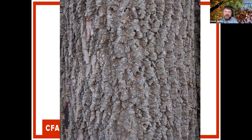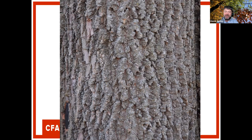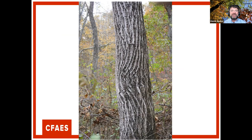White ash bark is shown, followed by butternut (white walnut), which has a distinctive zebra-like pattern: broad, light-colored, flat-topped ridges. Bark varies by age and growth rate and looks different across regions. Butternut is rarely seen in the woods anymore due to a fungal canker disease.